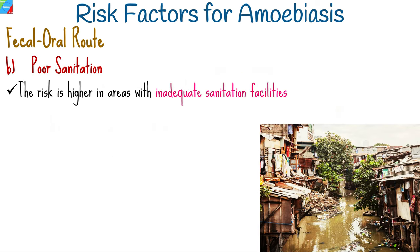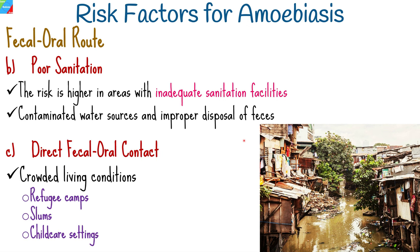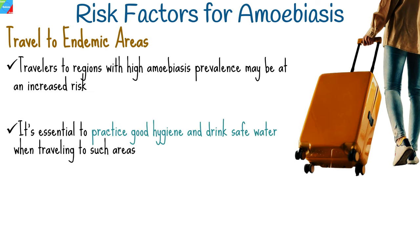In areas with inadequate sanitation facilities or poor hygiene practices, the risk of amoebiasis transmission is higher. Contaminated water sources and improper disposal of feces can lead to the spread of the parasite. Person-to-person transmission can occur through direct contact with the feces of an infected individual, especially in crowded living conditions such as refugee camps, slums, or childcare settings. Travelers to regions with high amoebiasis prevalence may be at increased risk if they consume contaminated food or water.